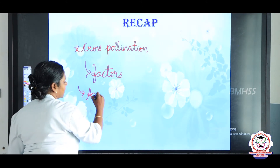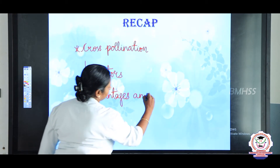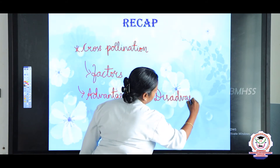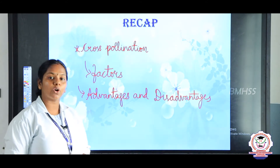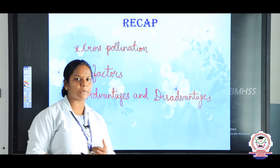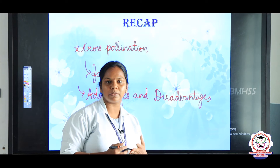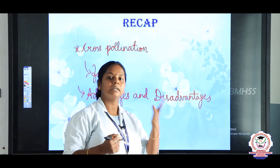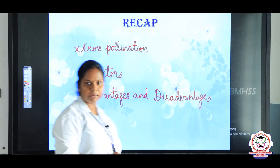We also discussed about the advantages and disadvantages of cross pollination. In this session, we are going to discuss about the various agents of pollination. Cross pollination requires some agents because, unlike self pollination, a single flower cannot pollinate itself. It requires some agents such as wind — some non-living agents as well as some living agents. We are going to discuss them one by one.